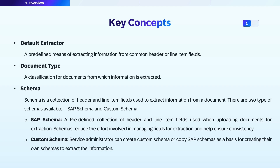To have a better understanding of this topic, it would be beneficial to understand some of the following concepts. Default extractors are predefined extractors which help to extract information, both header and line items, from the documents. Document type is a classification for documents from which information is extracted.